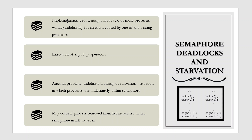The implementation of a semaphore with a waiting queue may result in a situation where two or more processes are waiting indefinitely for an event that can be caused only by one of the waiting processes. The event in question is the execution of a signal operation. When such a state is reached, these processes are said to be deadlocked.